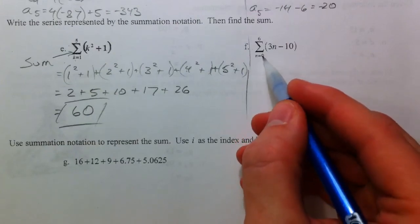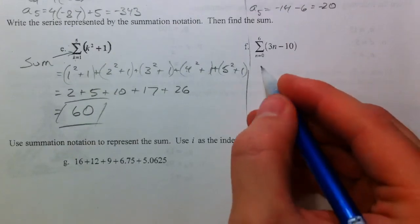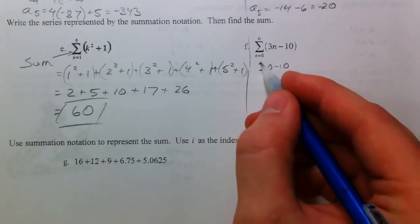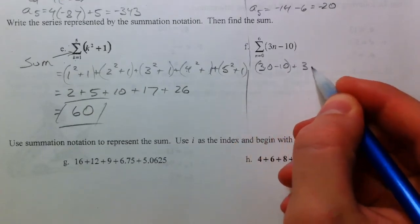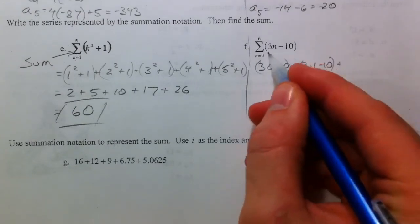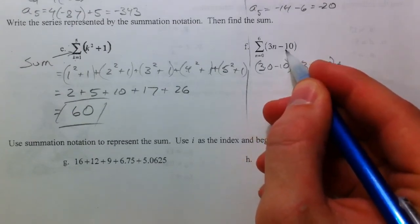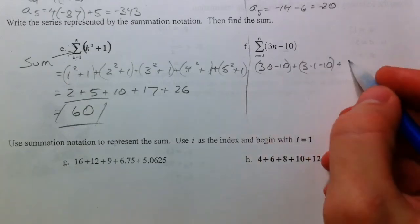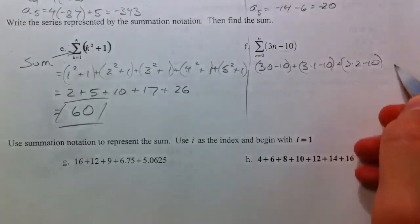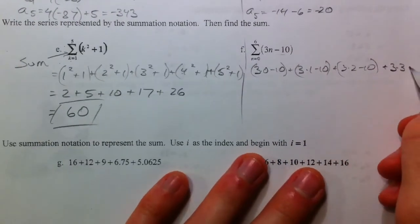Next one. From 0 to 6. So, we're going to plug in 0 first. 3 times 0 minus 10, plus 3 times 1 minus 10. And I'm going to do this one all the way out. Technically, this is an arithmetic series. We'll come to the shortcut later on. 3 times 2 minus 10,